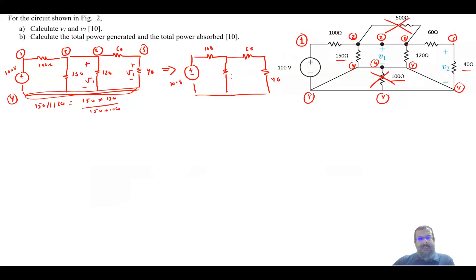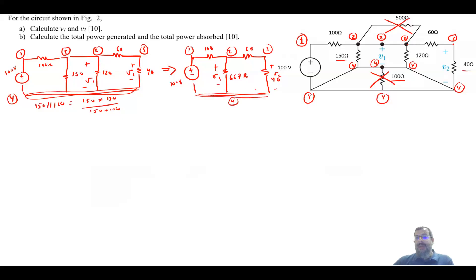That gives me 66.7 ohm. This is still your V1, and this is still your V2. The nodes are now 1, 2, 3, and 4. It becomes two loops — even better.